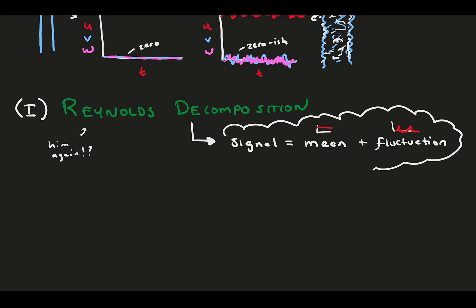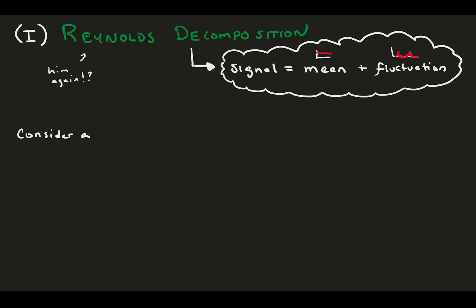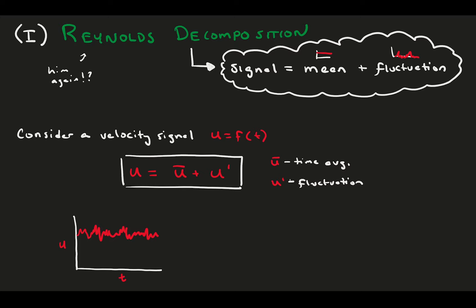Consider the velocity signal, which is in this case a function of time. We can break u up into the sum of u-bar and u-prime. Here, u-bar is the ensemble average, or time average, and u-prime is the fluctuating component that's left over.